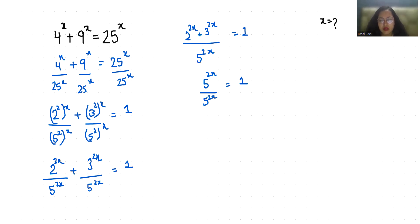So we can write it as (2/5)^(2x) plus (3/5)^(2x) equals 1.